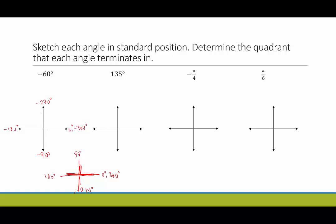So using that as our guide: negative 60 degrees is in between zero and negative 90, a little bit closer to 90. We draw the terminal side there with an arrow, and draw the arc with an arrow pointing clockwise to indicate negative 60 degrees. This one terminates in quadrant four.